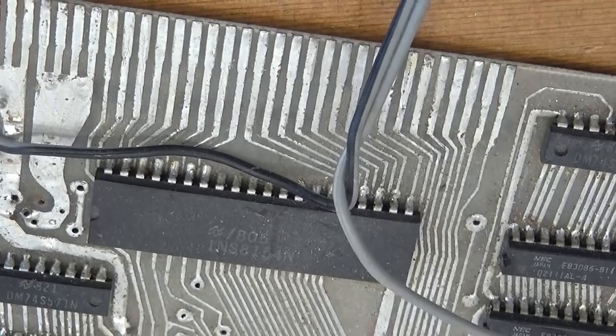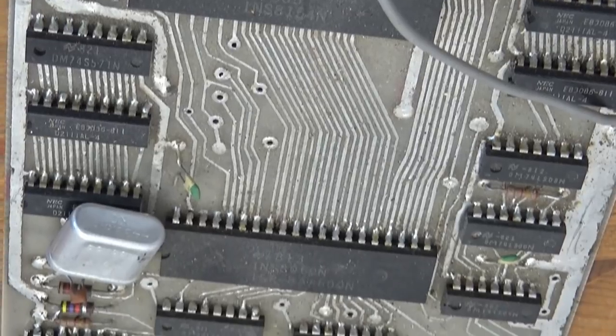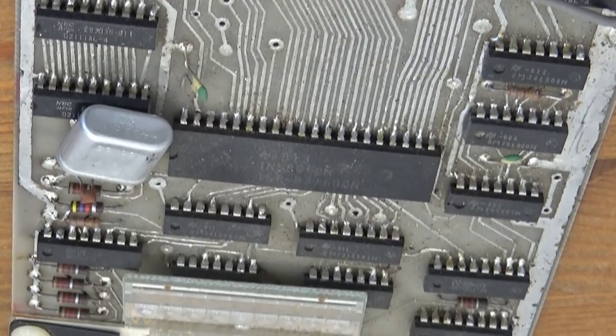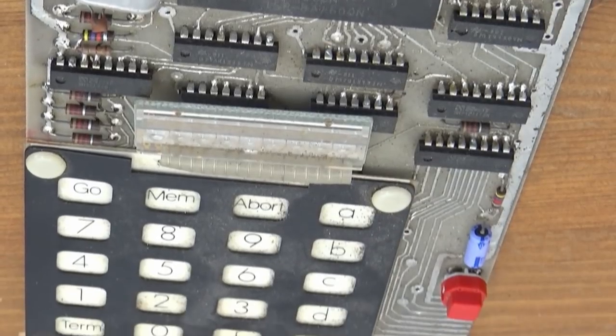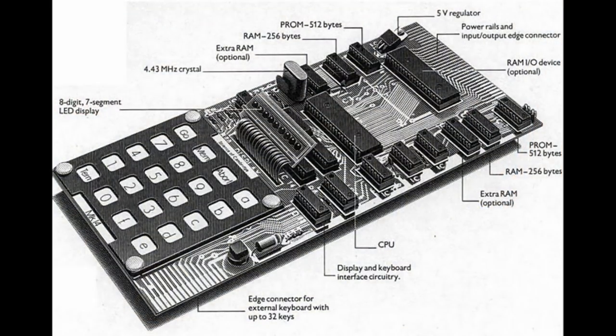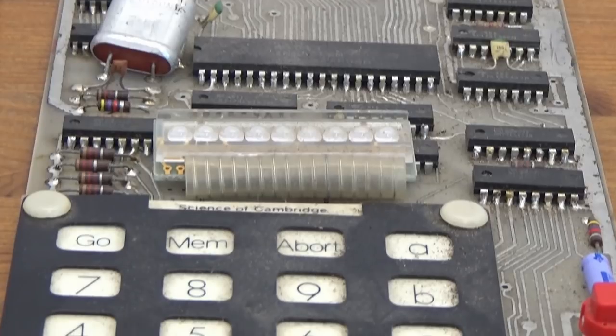This was the predecessor to his ZX80 and his ZX81 home computer kits. The Mark 14 came with a full kit of instructions including details on how to solder it together and how to get it working. A full breakdown of its internal ROM code was available as well so you could write your own programs in machine code hexadecimal.